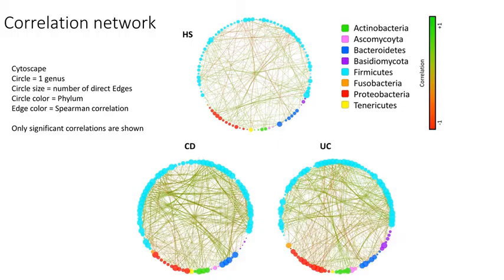The global correlation network, which was homogenous and balanced in LC subjects, was particularly heterogeneous and unbalanced in IBD.